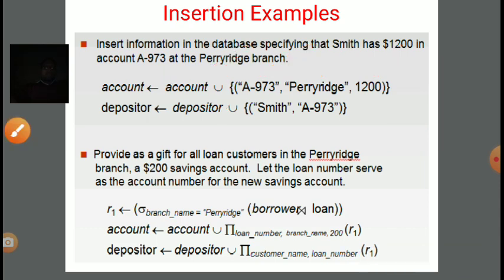Next example: provide as a gift, for all loan customers in the Paris branch, a $200 savings account. Let the loan number serve as the account number for the new savings account. Here we require two relations — borrower as well as loan — because some information comes from borrower and some from loan. We apply a natural join of borrower and loan with sigma condition branch = 'Paris', storing in R1. Then account ← account ∪ π(loan_number, branch_name, 200)(R1), and depositor ← depositor ∪ π(customer_name, loan_number)(R1).